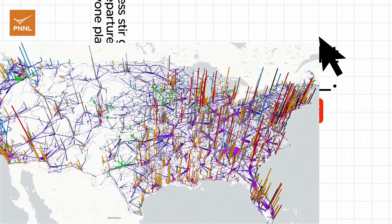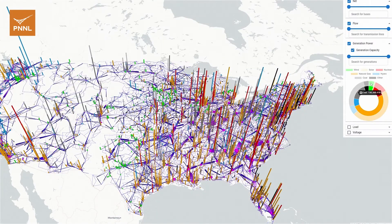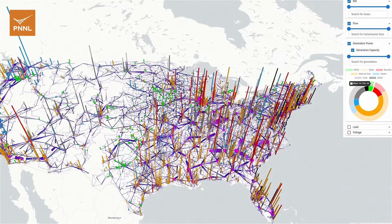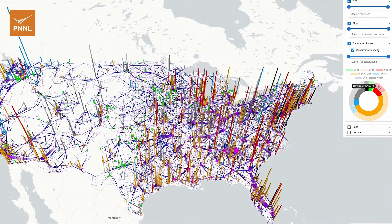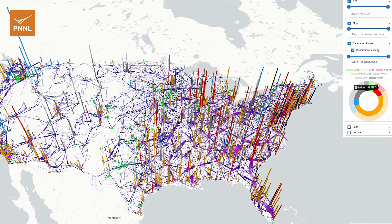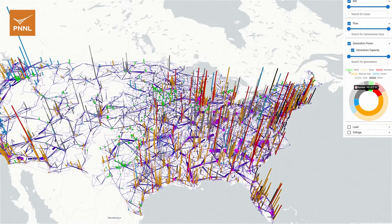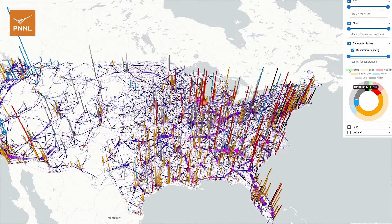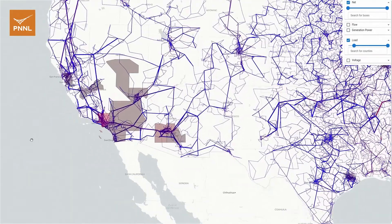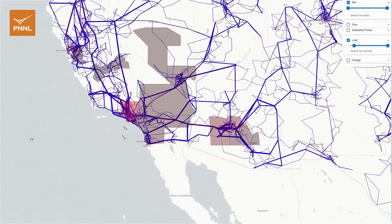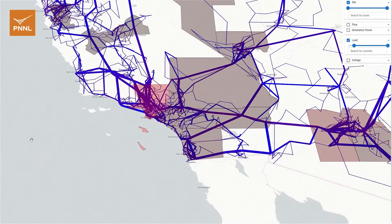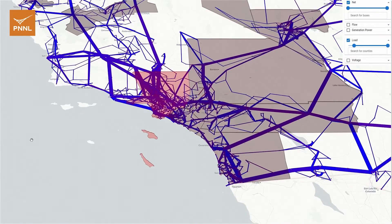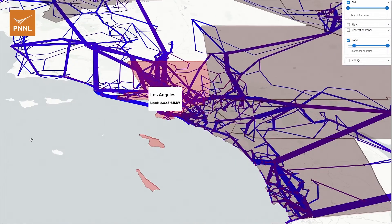We know that generative AI tools are always evolving, so we want to make sure the tool is useful to grid operators. Right now, ChatGrid pulls synthesized grid data from the Exaco model of the nation's grid. It does not have access to any sensitive data.